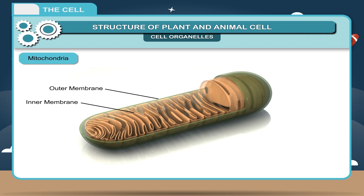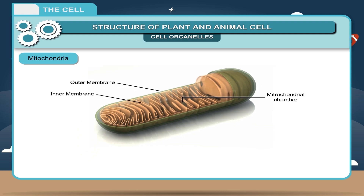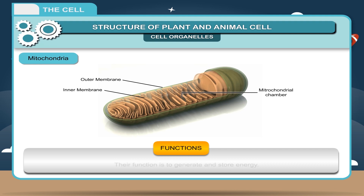The mitochondria are bounded by a double layer membrane. The inner membrane is infolded to form many projections which are called cristae. Inside the mitochondria, there is a hollow cavity called the mitochondrial chamber. Their function is to generate and store energy.